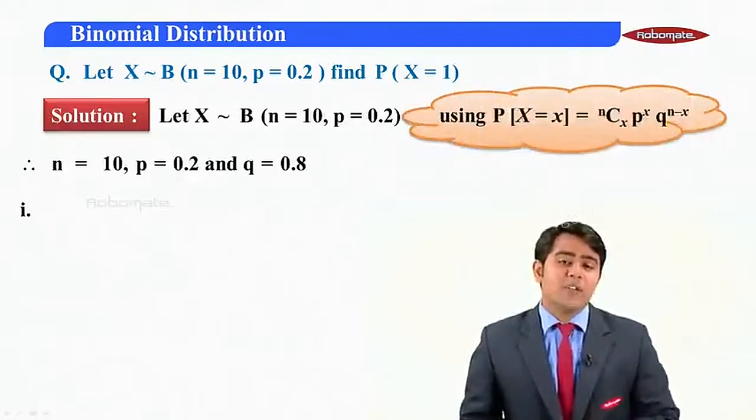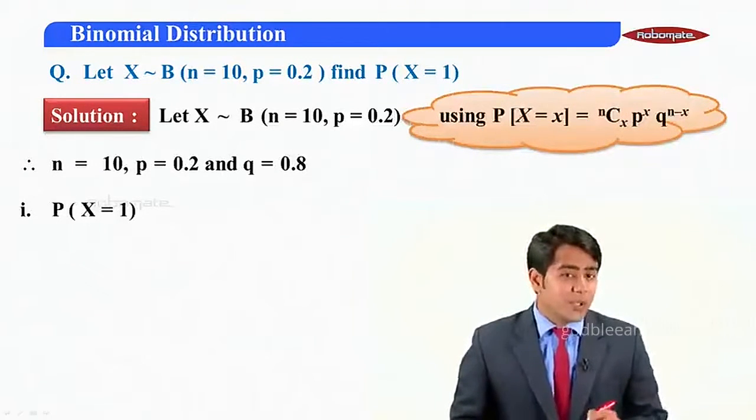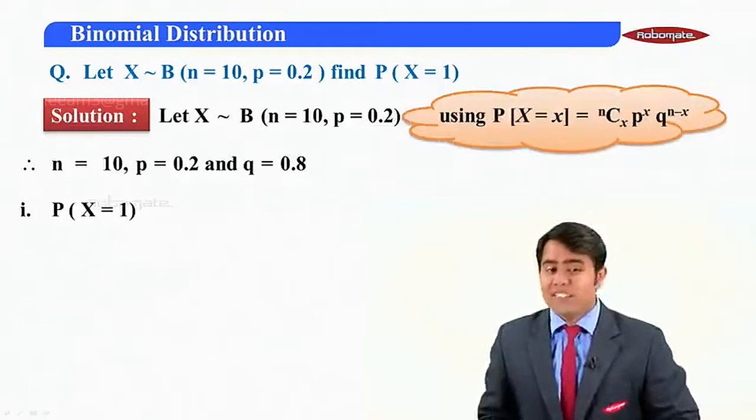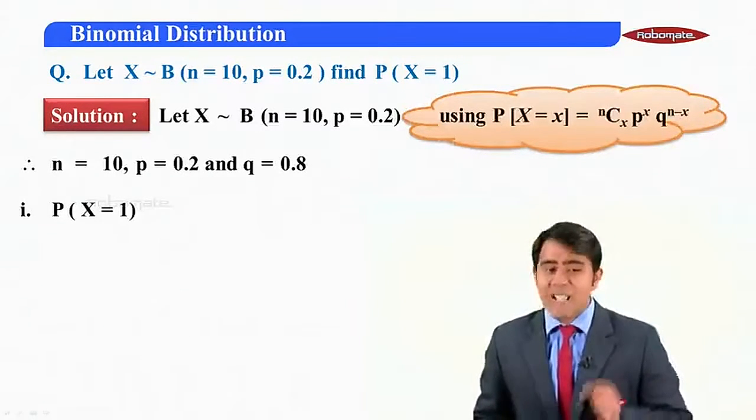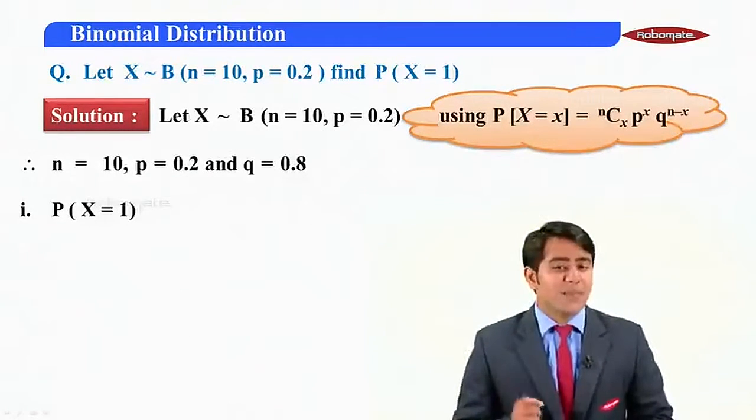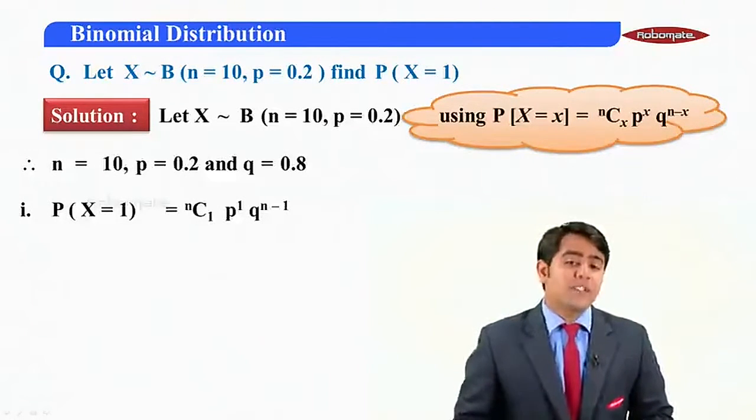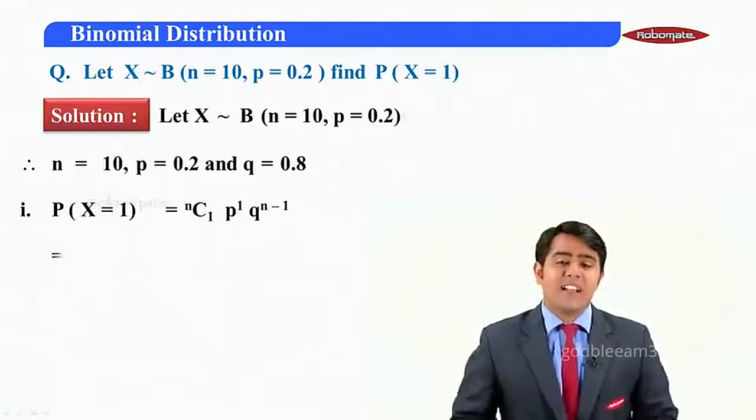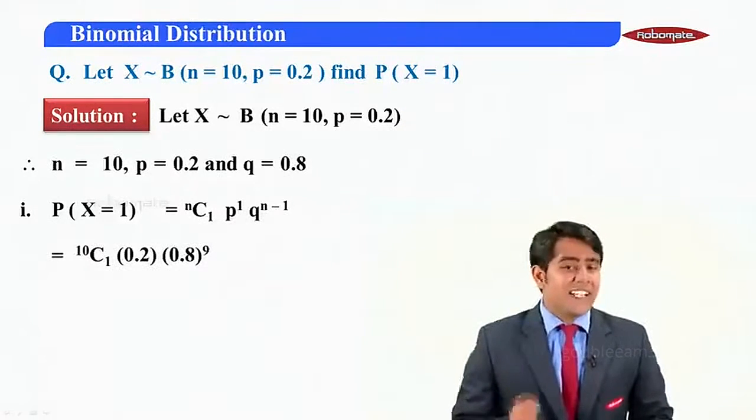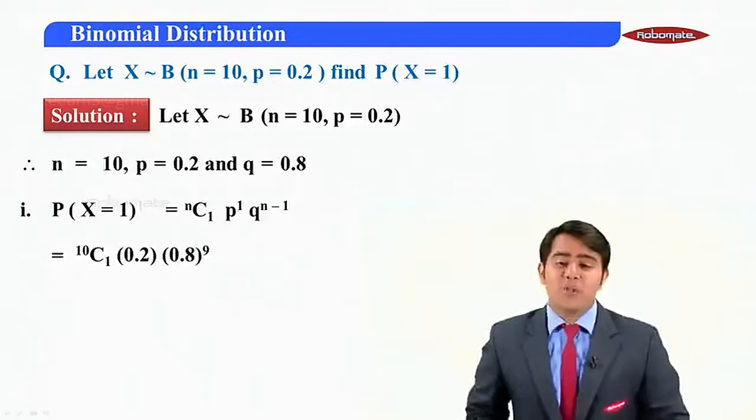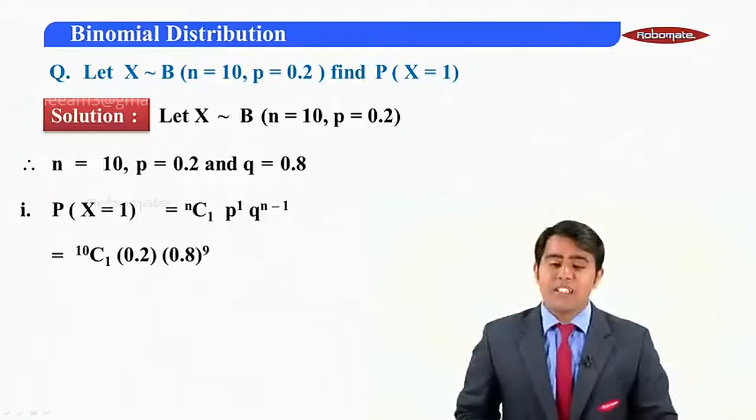Now, on further simplification, I need to find out the value of P(X=1). And I will be using the formula nC1 P^1 Q^(n-1). So substituting the values here, the values will now turn out to be as 10C1(0.2)^1(0.8)^9.